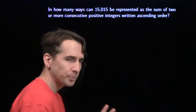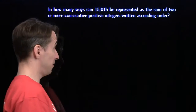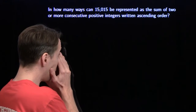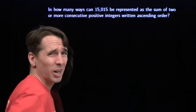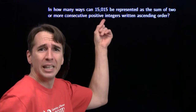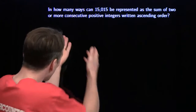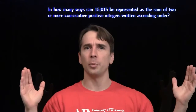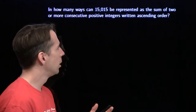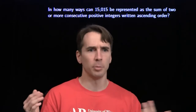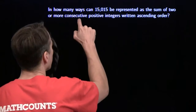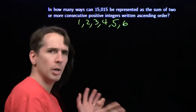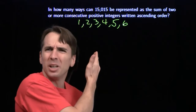Let's try a harder problem. We want to represent 15,015 as the sum of two or more consecutive positive integers. That looks hard — we could just do trial and error, but that might take a long time. We have consecutive integers again, so we can use the middle number approach. Our previous two examples had an odd number of numbers with a clear middle, but what if our numbers are 1, 2, 3, 4, 5, 6 — an even number of numbers? What's the middle number?